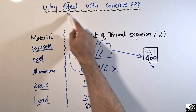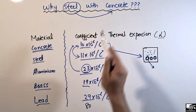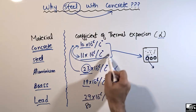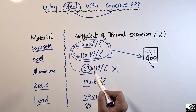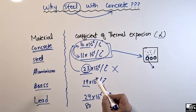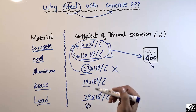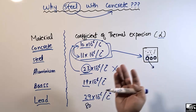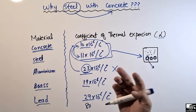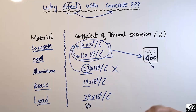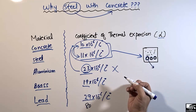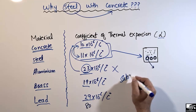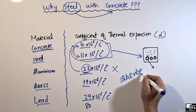The main reason why we provide steel with concrete is because of its similar coefficient of thermal expansion. During the lifespan, the bond will not deteriorate or be affected by stresses due to variation in temperature. Hope you guys understand, and don't forget to subscribe to our channel for daily Seven Engineering videos.